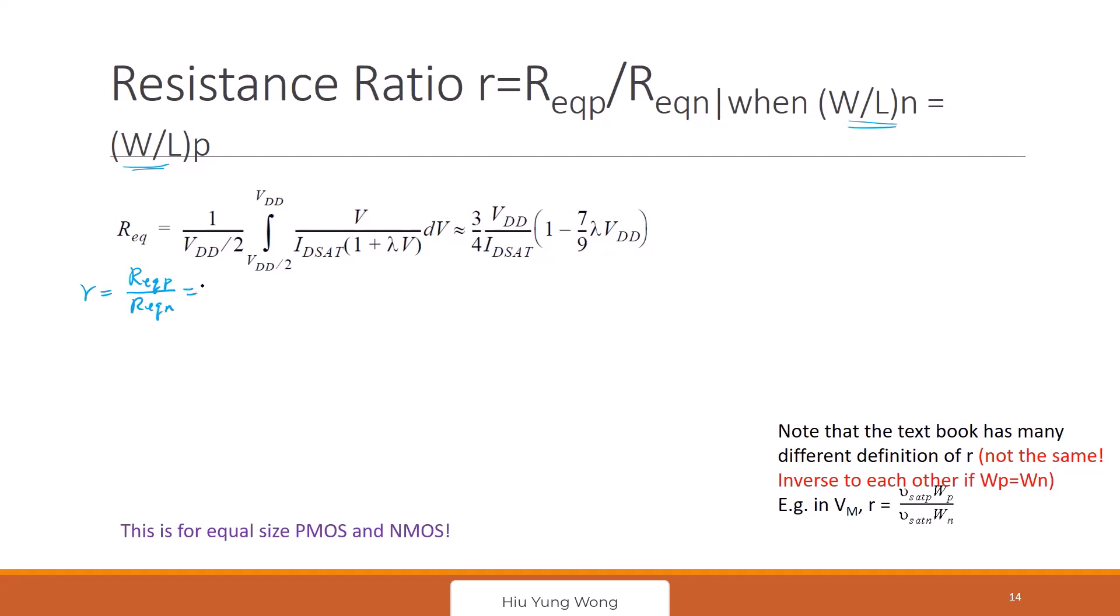Which is equal to—they have the same voltage, right? So they both all go for VDD. Equal to IDSAT N divided by IDSAT P.